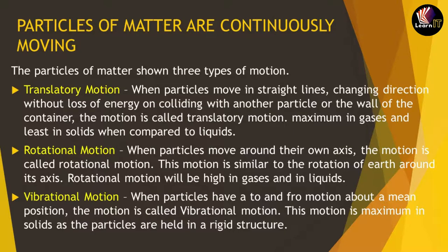Now we will move to the last type of motion, which is vibrational motion. In vibrational motion, the particles move to and fro — forward and backward around a mean position. If a body is leaning forward and coming backward repeatedly, that kind of motion is called vibrational motion. This motion is maximum in solid matter, as the particles are held in a very rigid or tight structure.